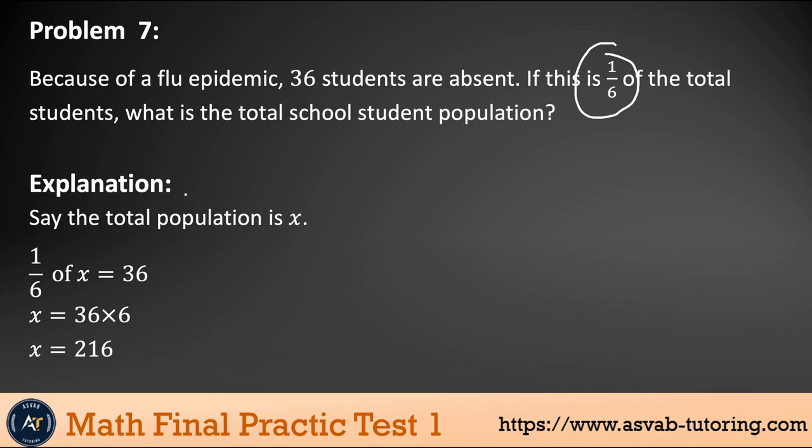What you could do—say like the total population is x. So one sixth of x gives you 36. This 36 is actually absent, not all the student is 36. Make sure that you read the question carefully, what they're exactly asking, not just looking at the numbers. If you solve that, cross multiply, that gives you x equal to 216. So there are 216 students in the school, one sixth or absent, so that is 36.